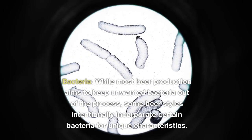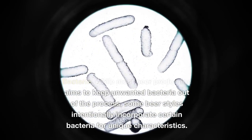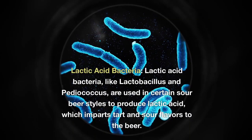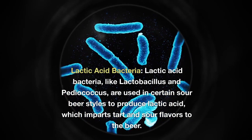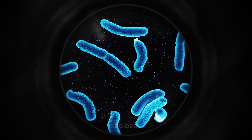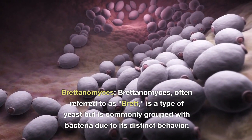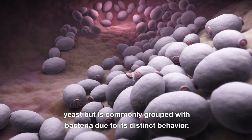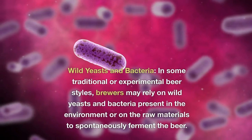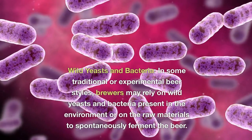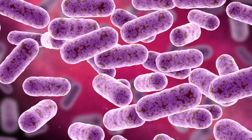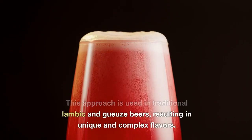While most beer production aims to keep unwanted bacteria out of the process, some beer styles intentionally incorporate certain bacteria for unique characteristics. Lactic acid bacteria, like Lactobacillus and Pediococcus, are used in certain sour beer styles to produce lactic acid, which imparts tart and sour flavors. Brettanomyces, often referred to as Brett, is a type of yeast commonly grouped with bacteria due to its distinct behavior, used in wild and sour beer styles to add funky and complex flavors. In some traditional or experimental styles, brewers may rely on wild yeasts and bacteria present in the environment to spontaneously ferment the beer, as in traditional lambic and gueuze beers, resulting in unique and complex flavors.